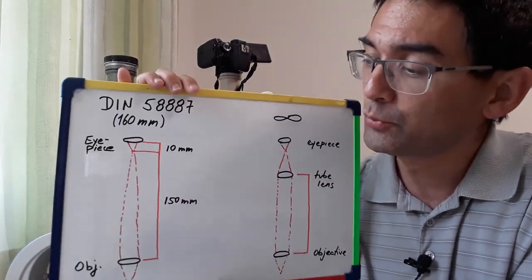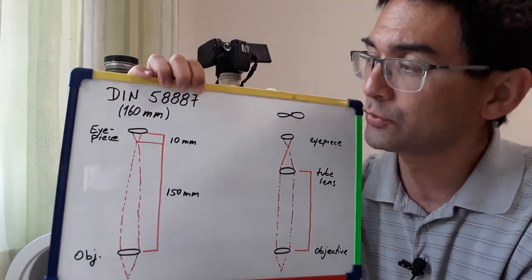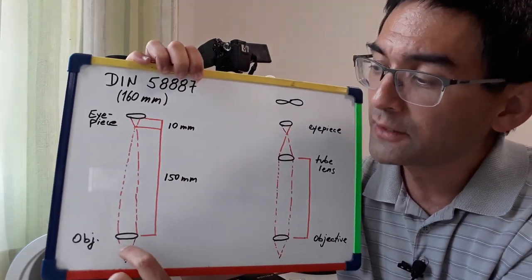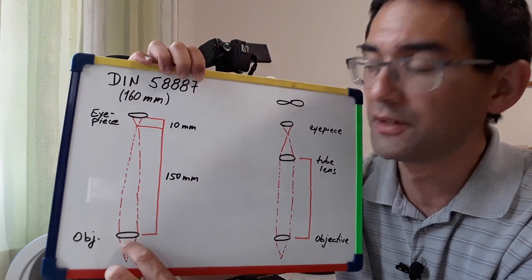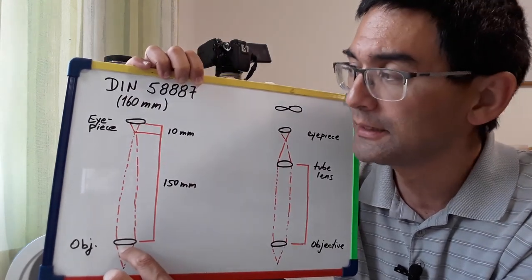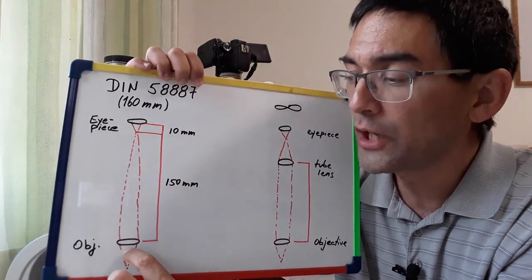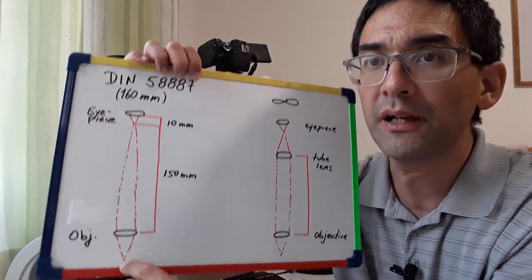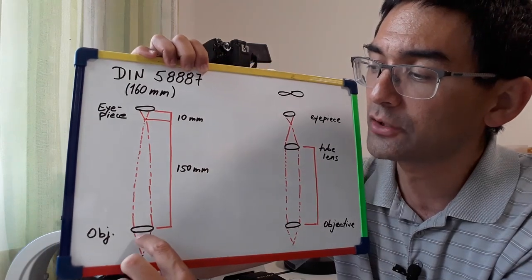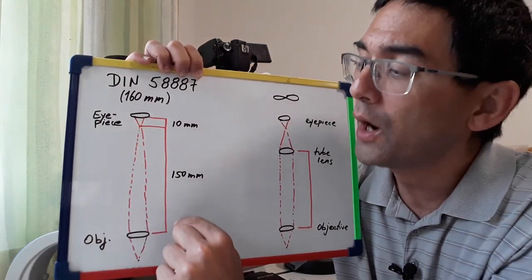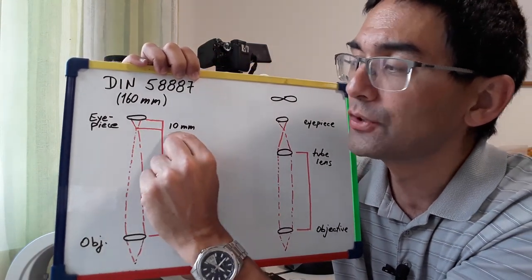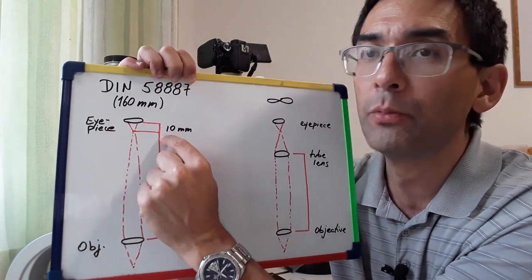I'm going to start off with the DIN objective and what I've done here is I've drawn a schematic diagram of a microscope. The objective lens is supposed to be this one down here. I greatly simplified it and the eyepiece is up here and what this objective lens does is, this is the specimen down here, it creates an image 150 millimeters into the tube of the microscope.